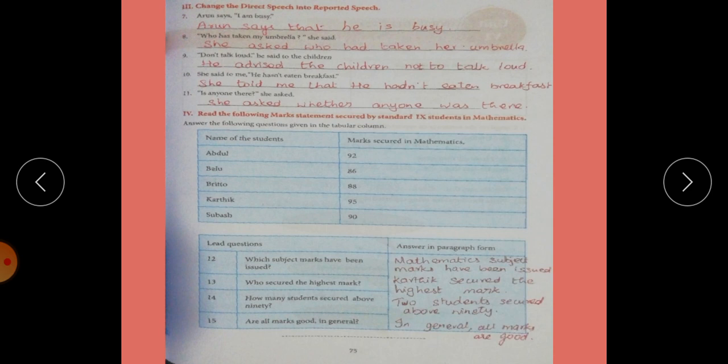Third exercise. Change the direct speech into indirect speech or into reported speech. Seventh one. Arun says I am busy. Arun says that he is busy. Says means we don't change tense.